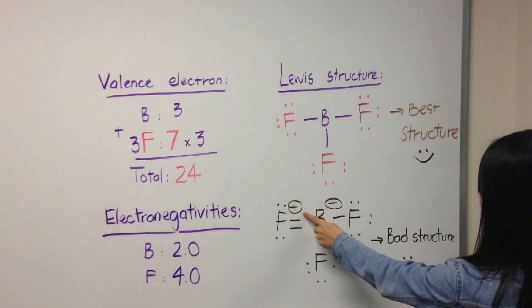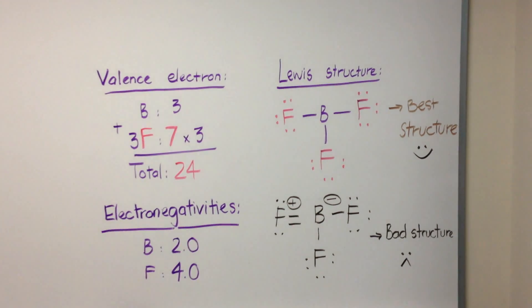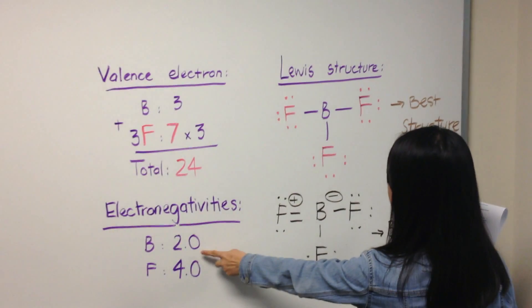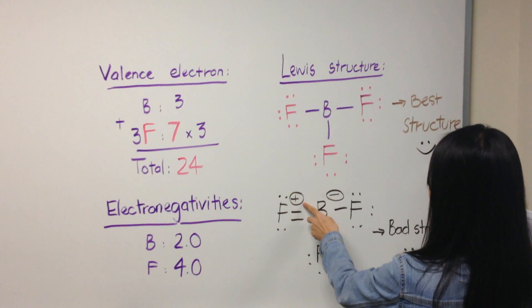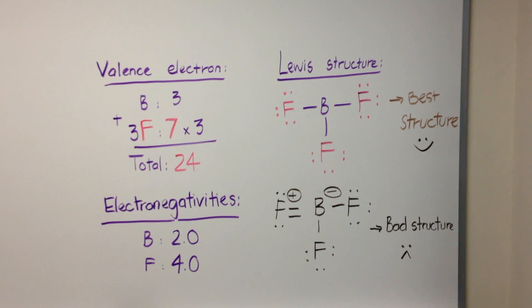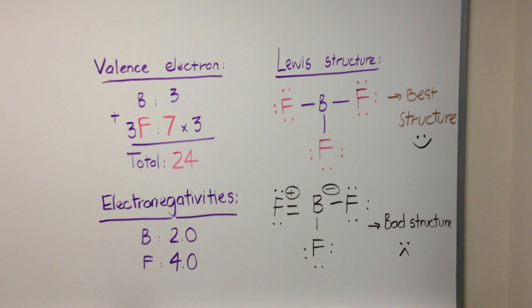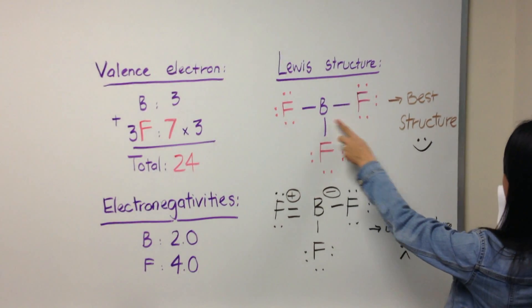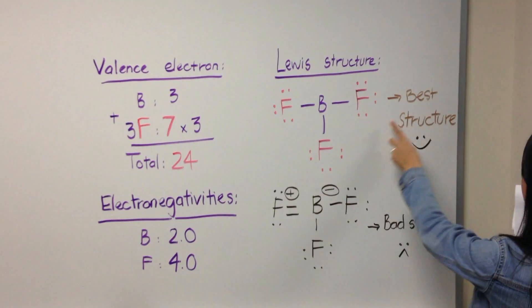Since fluorine is significantly more electronegative than boron, it is unfavorable for fluorine to have a positive formal charge and boron to have a negative formal charge when they are bonded together. Therefore, it is more favorable to leave the boron central atom as electron deficient than to add an additional bond and introduce two unfavorable formal charges.